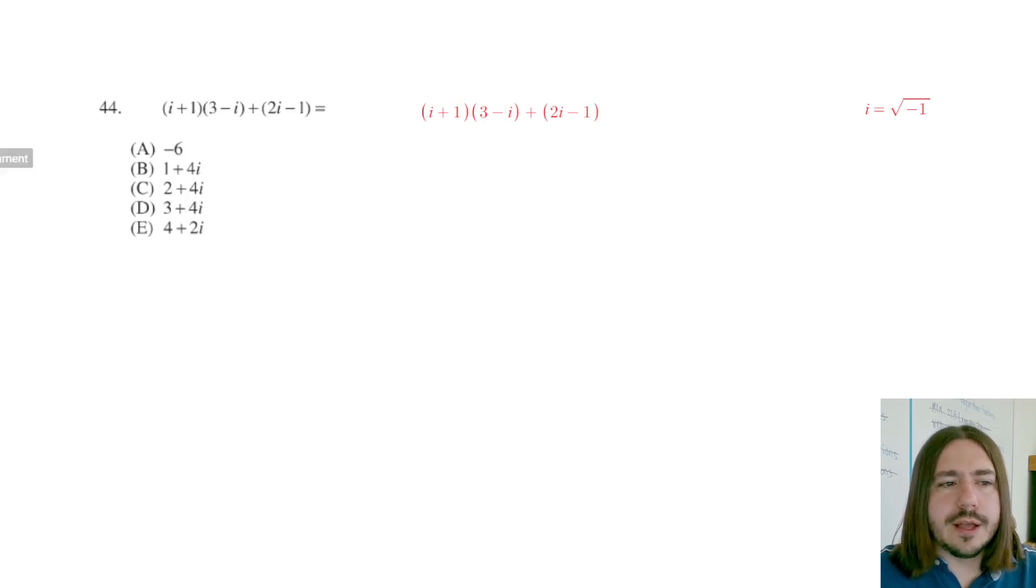So first we need to multiply. Multiplication comes before addition in our order of operations. So I'm going to multiply each term in this first binomial by each term in the second binomial. You may know this process by the acronym FOIL, first, outside, inside, last, to kind of help you keep track of what you're multiplying here. But basically, we just want to distribute the i to both of these terms, and we want to distribute the 1 to both of these terms.